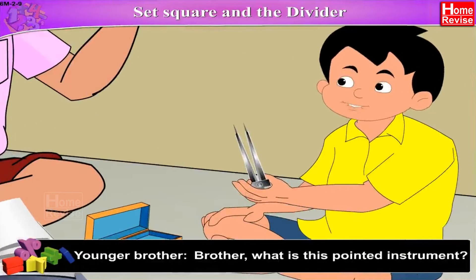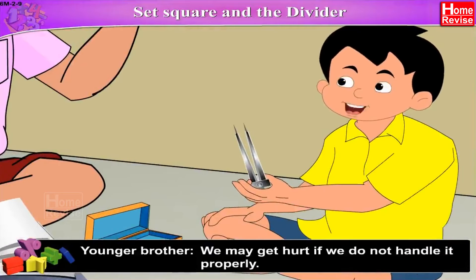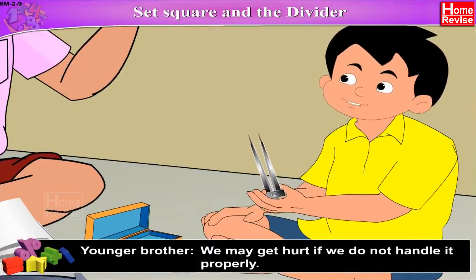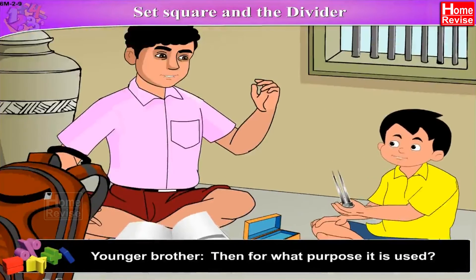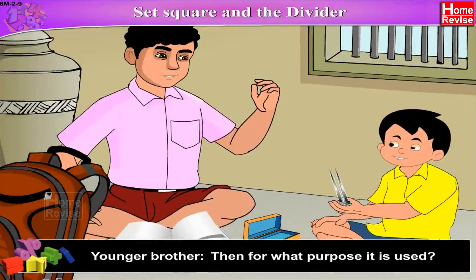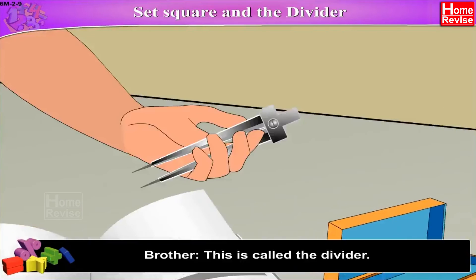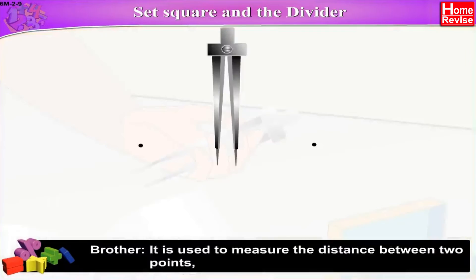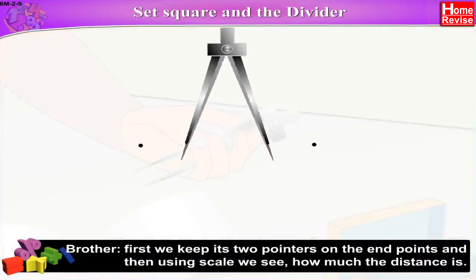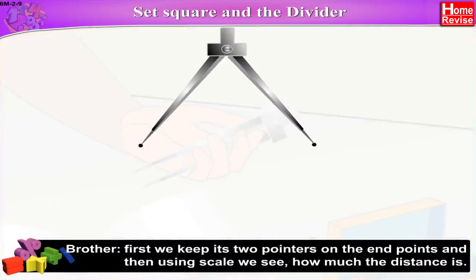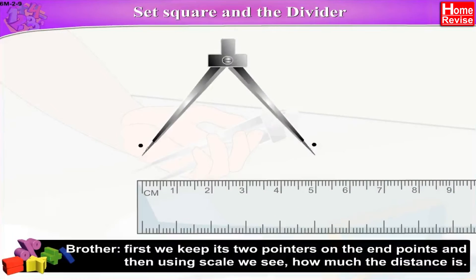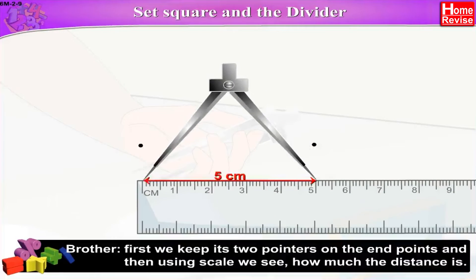Brother, what is this pointed instrument? We may get hurt if we do not handle it properly. Then for what purpose is it used? This is called the divider. It is used to measure the distance between two points. First, we keep its two pointers on the end points and then, using a scale, we see how much the distance is.